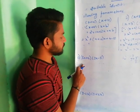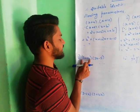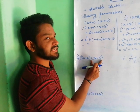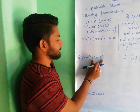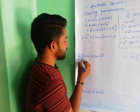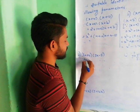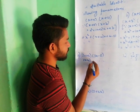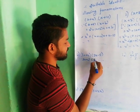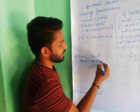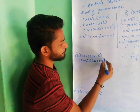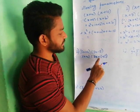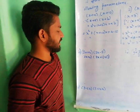Coming to the third one: 3x plus 4 into 3x minus 5. So I have written 3x plus 4, and 3x plus of minus 5. Plus into minus gives minus 1.